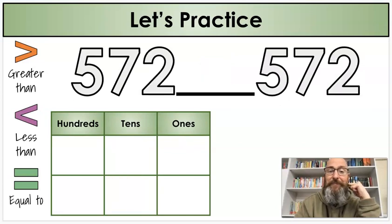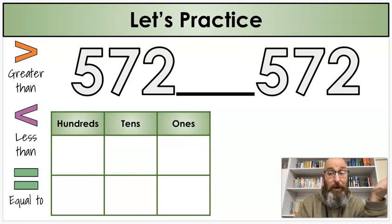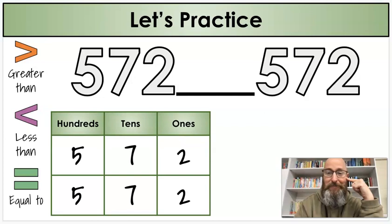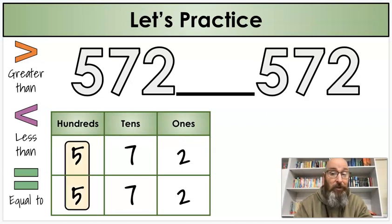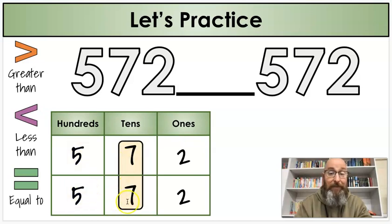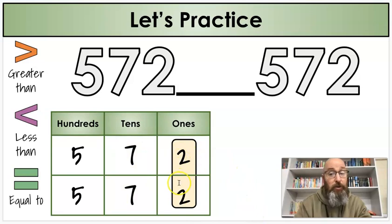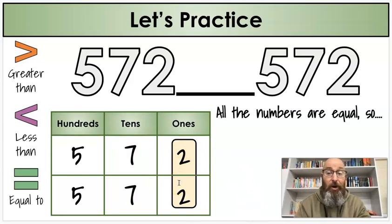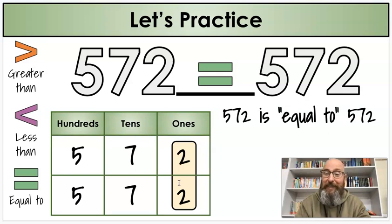All right. This is our last one. Two numbers again. What's step one? Write the numbers. Very good. What's step two? I start comparing. Hundreds first. I always start at my largest place. 500 and 500 are the same. So what do I compare next? The tens. That's right. Are 70 and 70 the same? They are. What do I compare next? The ones. Are two and two the same? All the numbers are equal. So which sign do I use? The equal sign. And what's my sentence? Five hundred seventy two is equal to five hundred seventy two.